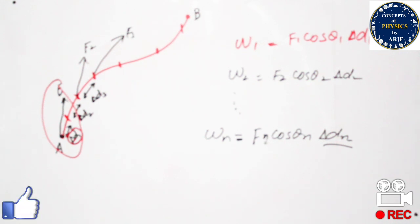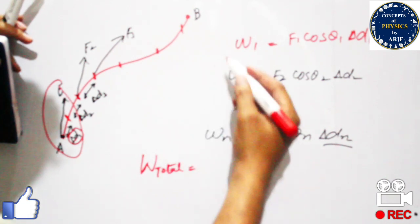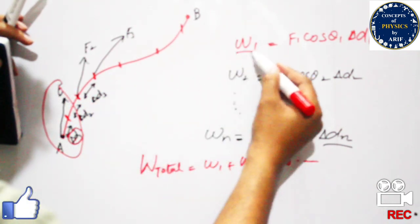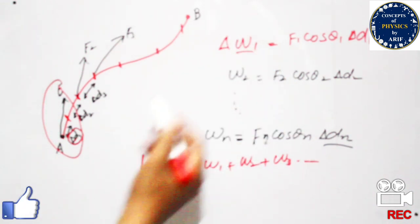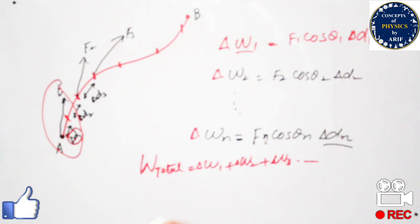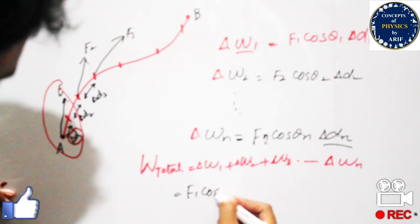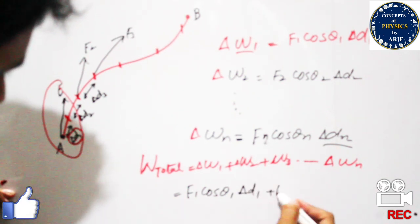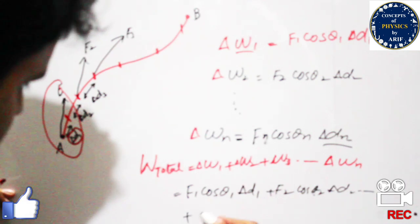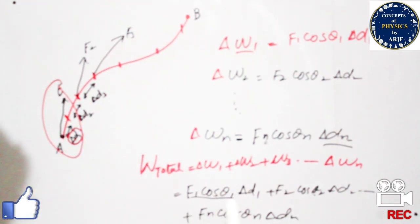The total work done is the sum of all the work: ΔW₁ + ΔW₂ + ΔW₃ and so on up to ΔWn. Expanding this, the total work is F₁·cosθ₁·Δd₁ + F₂·cosθ₂·Δd₂ + ... + Fn·cosθn·Δdn.